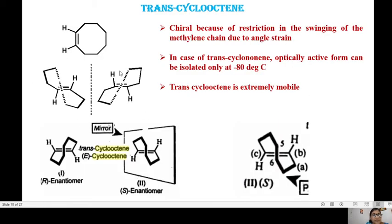Another example is provided by transcyclooctene, which is chiral because of the restriction of swinging of this methylene chain. In case of transcyclononene the optically active form can be isolated only at minus 80 degrees. But transcyclooctene is extremely mobile. You have these rings going back and forth, and you can have the R and S enantiomers.